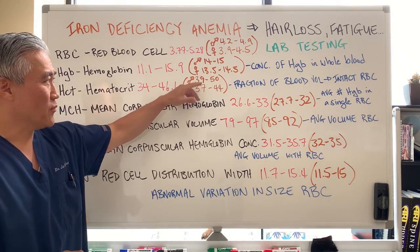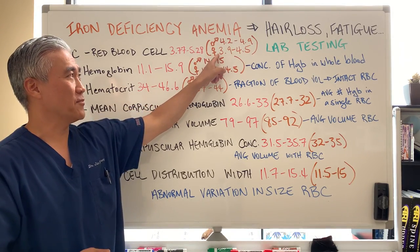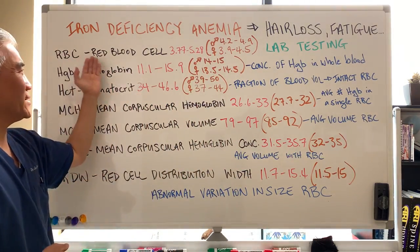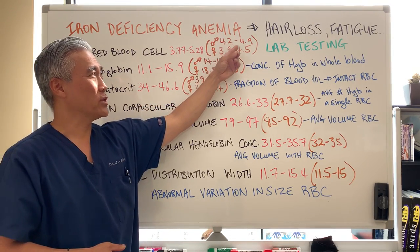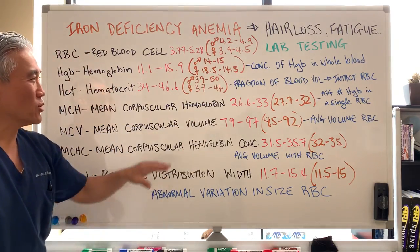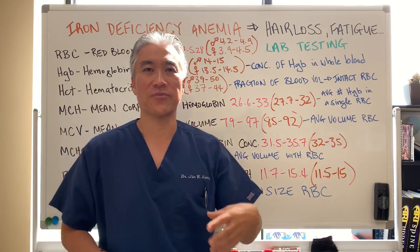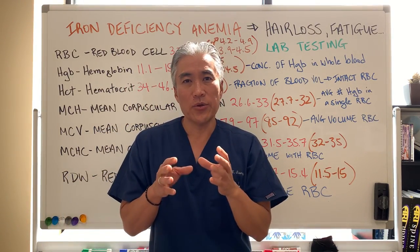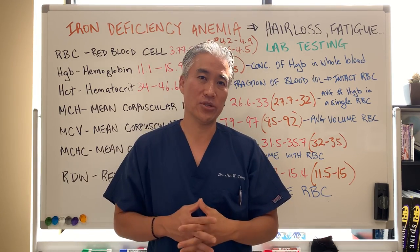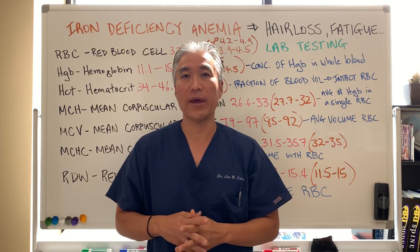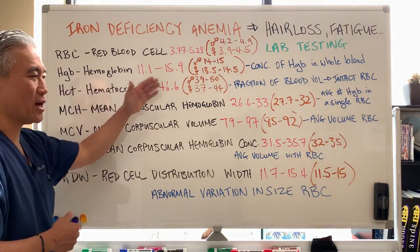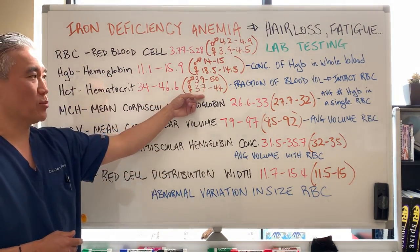The ones in brown indicate male and female ranges. The ranges are different from men to women. For red blood cell, men is 4.2 to 4.9 and female is 3.9 to 4.5. The brown indicates ranges for optimal levels, so you can pick up subtle iron deficiency earlier on when you look at the functional ranges in brown versus the red ranges in the lab.